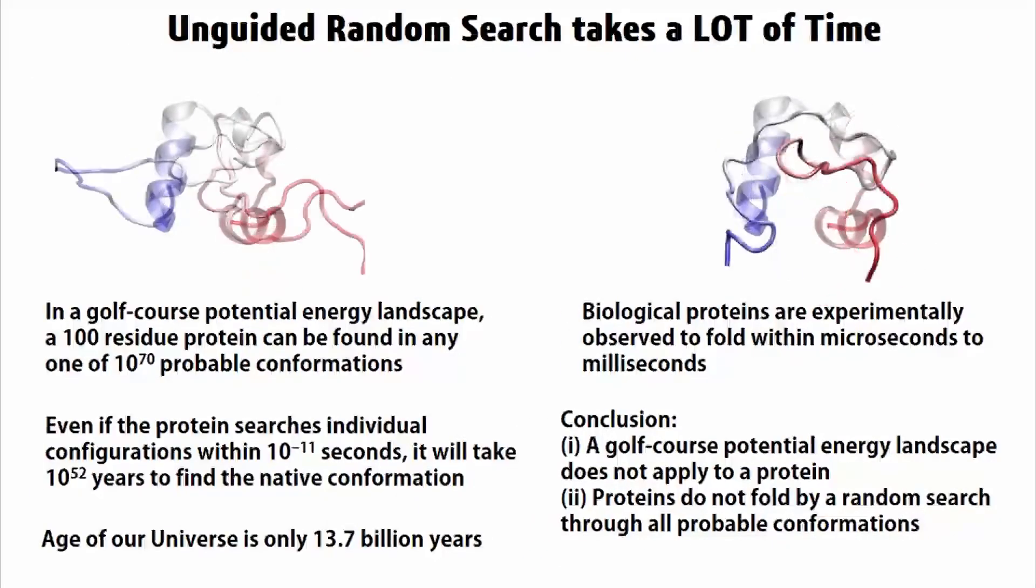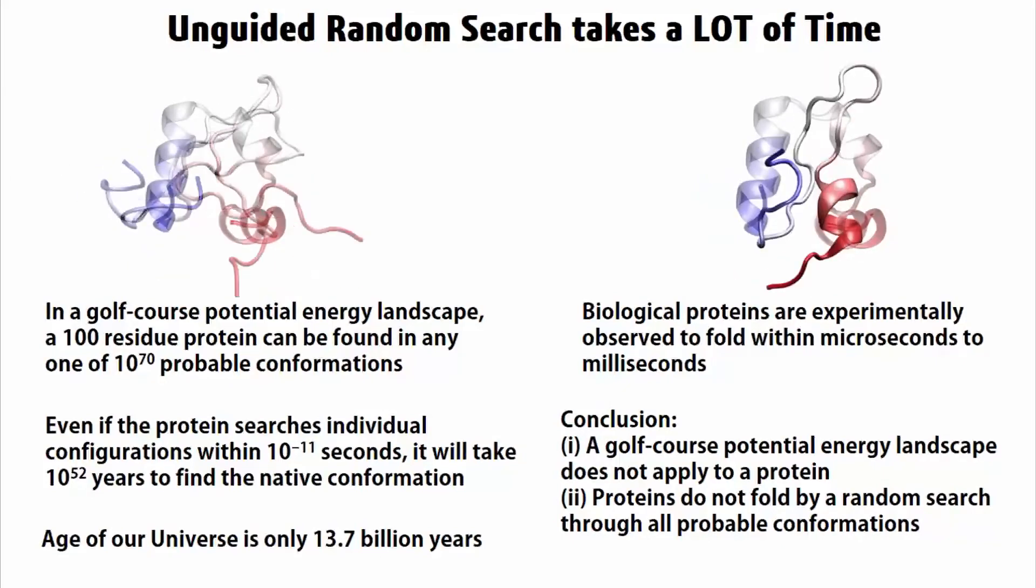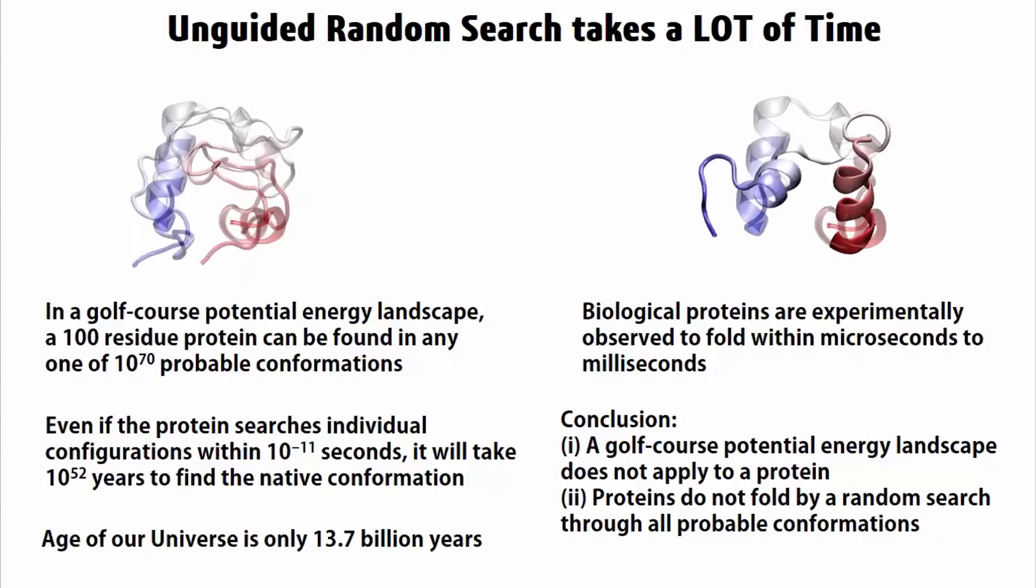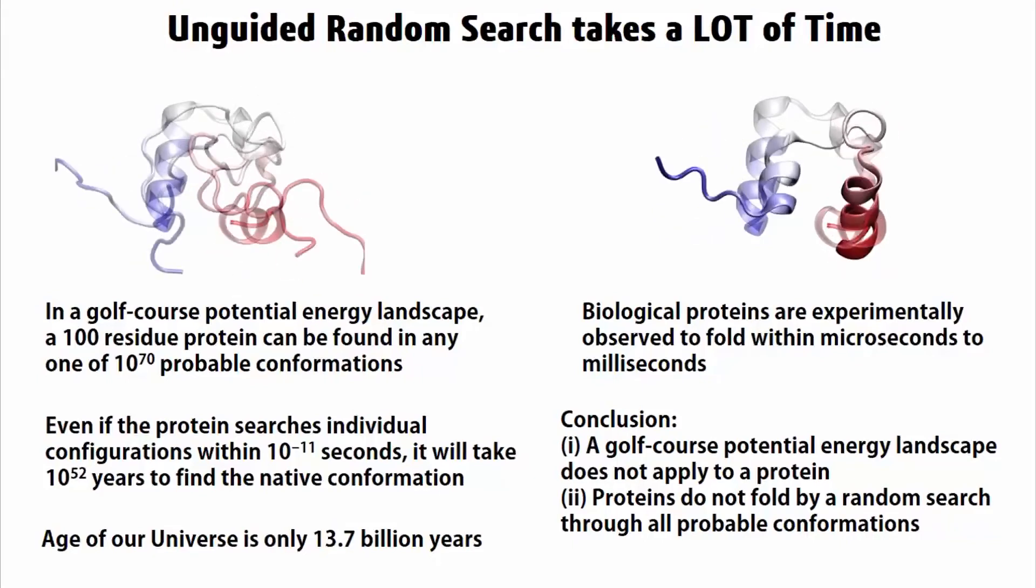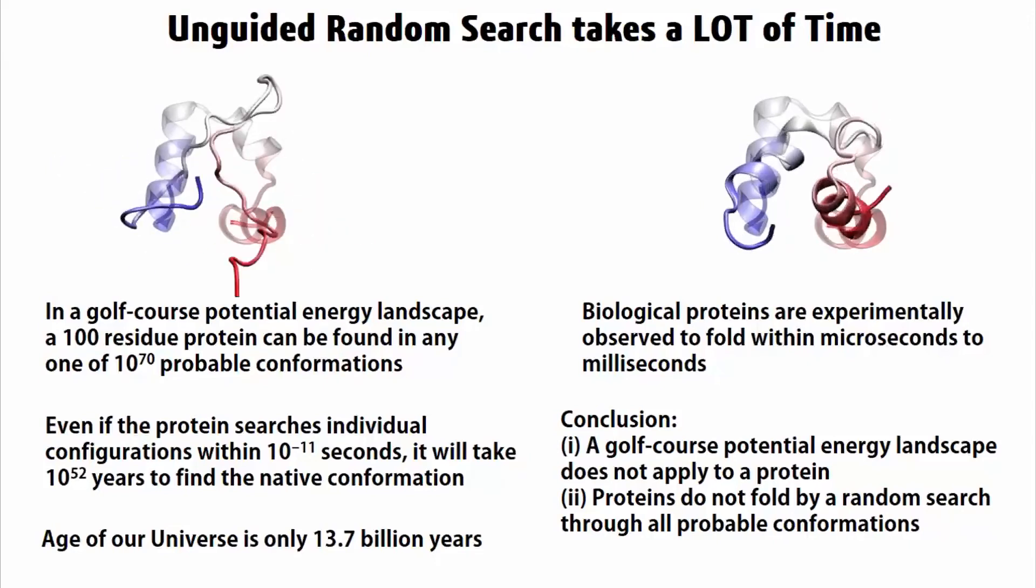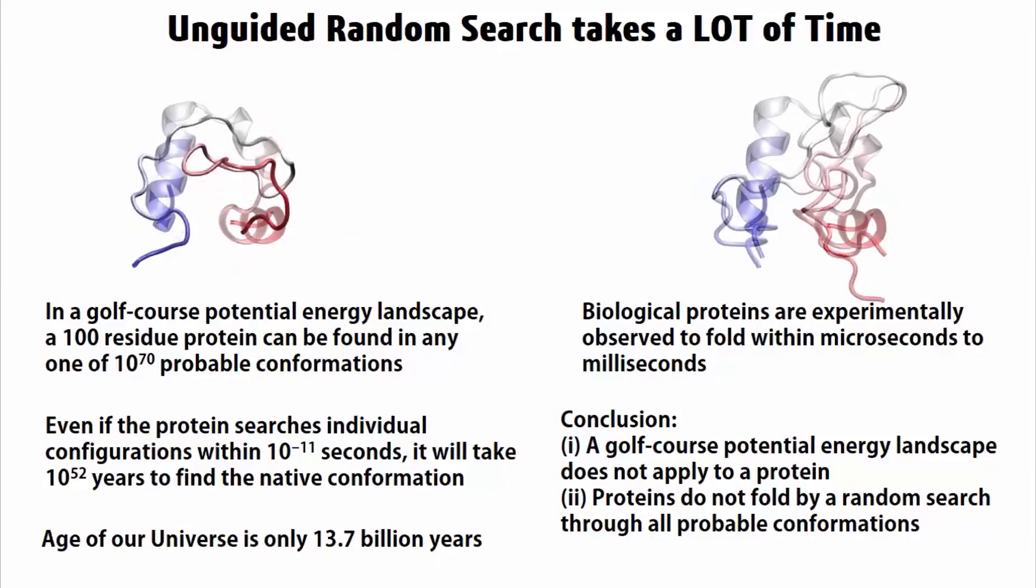For example, there are as many as 10 to the power 70 probable conformations for a 100 residue long polypeptide chain. Even if the polypeptide chain searches through the individual conformations as fast as 10 to the power minus 11 seconds, it will take 10 to the power 52 years to find the native conformation.